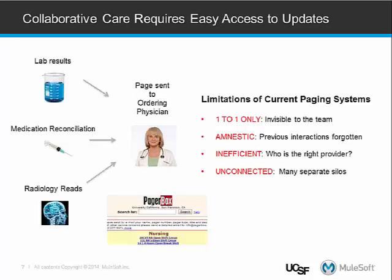Could things be better? Definitely yes, because there are many limitations to the current paging system. For one thing, it's only one-to-one. If I'm in the lab and I page a result to an ordering physician, that physician will know that information but nobody else will — until that physician acts on it by sending another page, writing on the chart, or placing an order. You can see how there are many opportunities for breakdown.